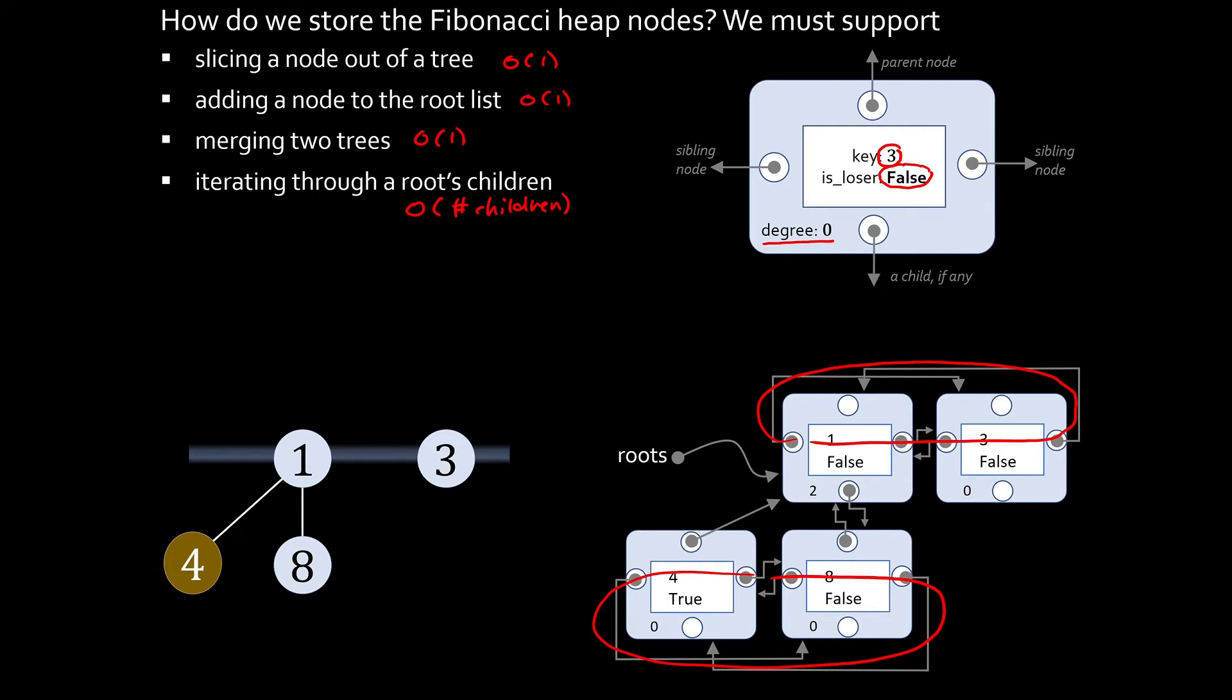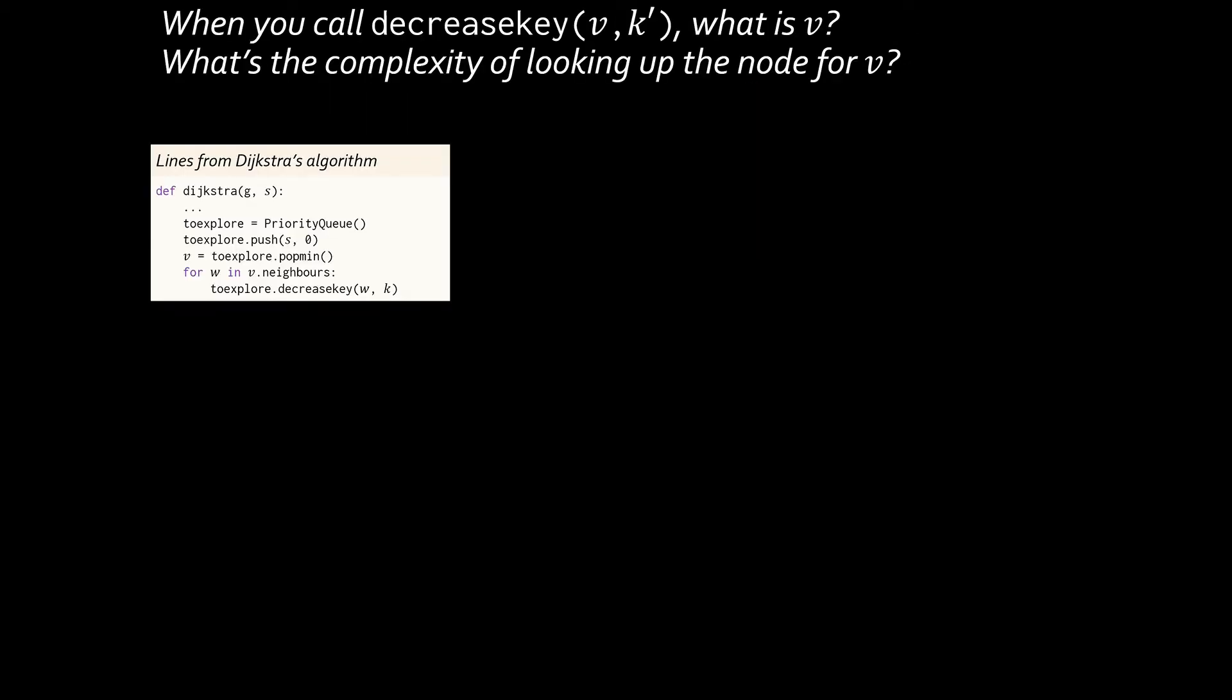But a bigger question from the point of view of software architecture is this question. If I want to decrease the key of a certain node, how do I refer to the node? Do I need to look it up somewhere? How expensive is that?